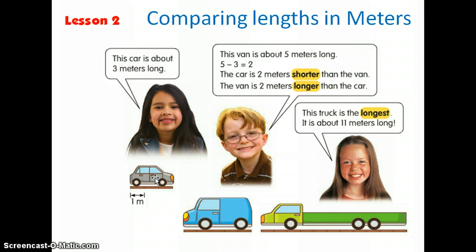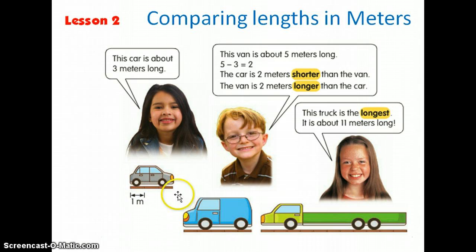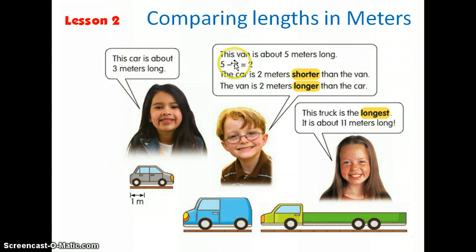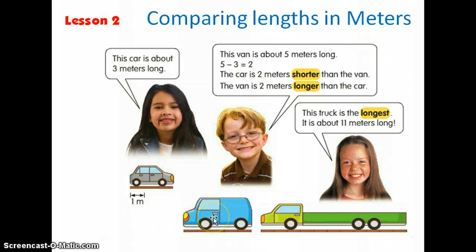Another way we're going to learn how to compare is by writing subtraction sentences. For example, the van is five meters long and the car is three meters long. To find the difference, I write five minus three equals two. So the van is two meters longer than the car. That's what we're learning today.